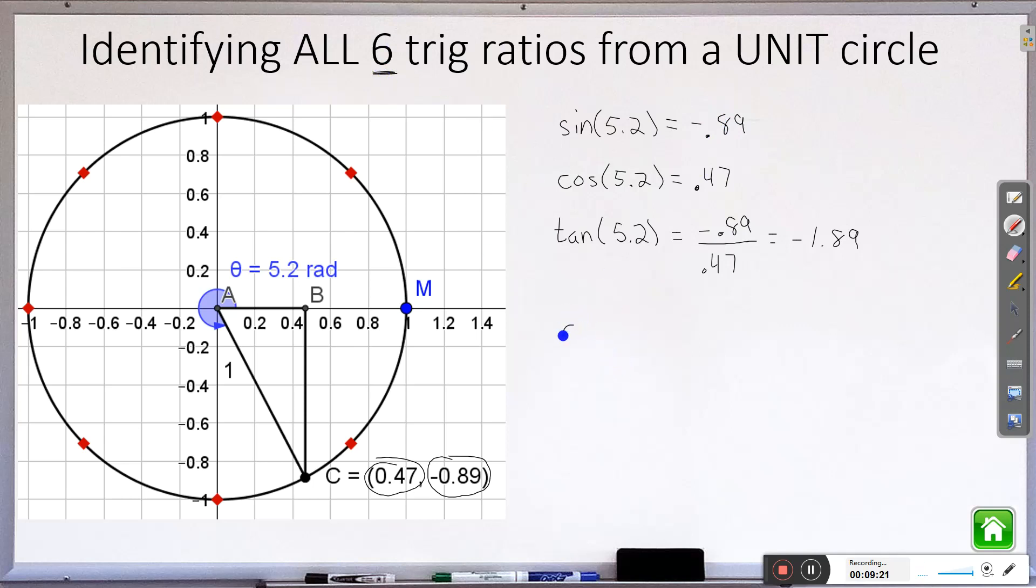So we have the cosecant of 5.2. Now this is the reciprocal of sine. So I technically do have to take this and turn it into a fraction again and flip it. So that will be negative 1 over 0.89. Secant. Again I'm going to take this one now. That's the reciprocal of cosine and flip it. So that's 1 over 0.47.